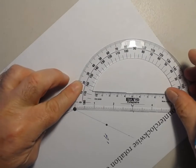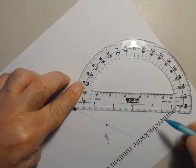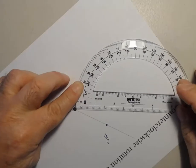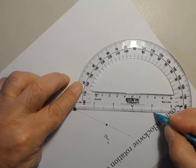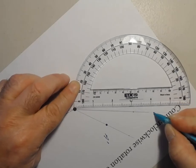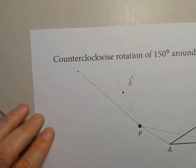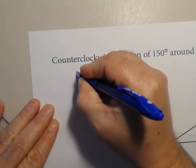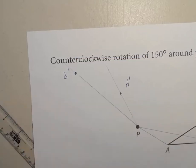I didn't go far enough on this line, so I'm going to extend it a little bit. Four and one-eighths is right here. So this point right here is the location of B prime.